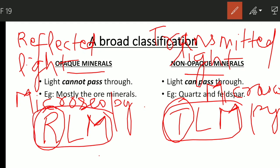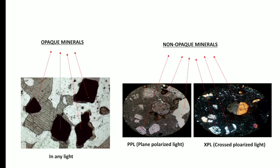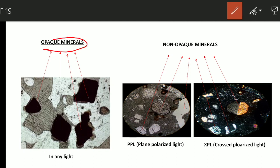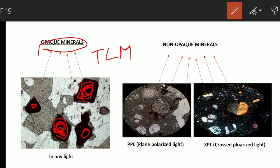Non-opaque minerals are studied under TLM and opaque minerals are studied under RLM. Here is an image under the microscope — I have marked these minerals as opaque minerals. These black spots are not allowing the light to pass through them, that is why they are appearing black. This specimen is being observed under TLM, so opaque minerals appear black and cannot be properly observed under the transmitted light microscope. A reflected light microscope, RLM, is the different technique to observe opaque minerals.